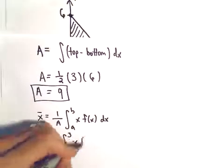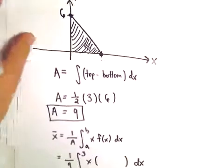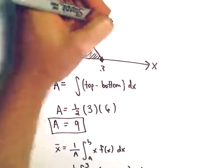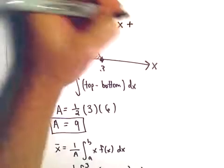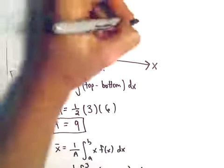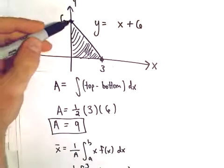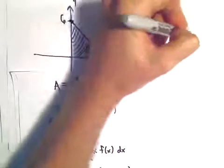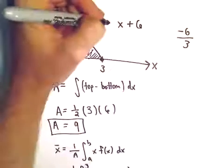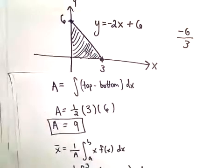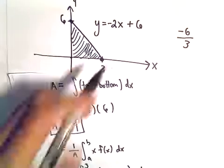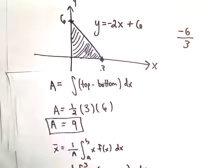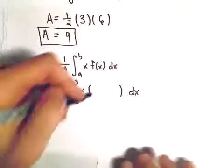We'll do x times our function. So y equals mx plus b, our b value is 6. Our slope, we're going down 6 and to the right 3. So down 6 and over 3, that looks like negative 2x plus 6 to me is the slope, or negative 2 is the slope, so the equation of the line would be negative 2x plus 6. So that's what I'm going to plug in here.